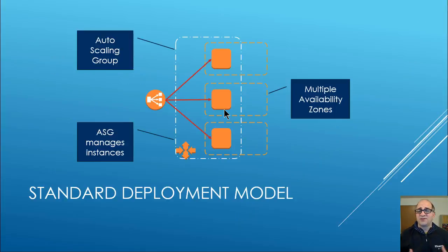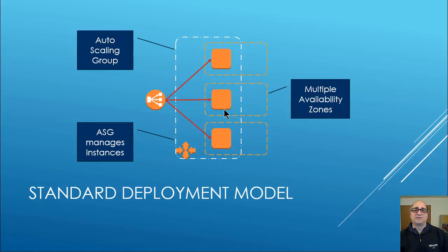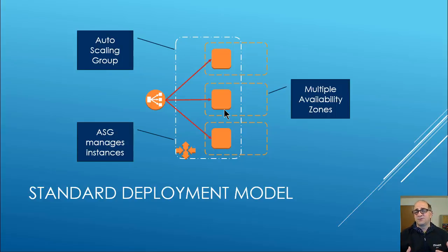The autoscaling group manages instances. Its job is to make sure that the pool size is the size you requested and that the pool is distributed across the availability zones you want. I've seen design documents where people put all their nodes in one zone to avoid inter-availability zone costs. In our case, we make sure every instance goes in a different availability zone until we run out of zones, and then we double up.